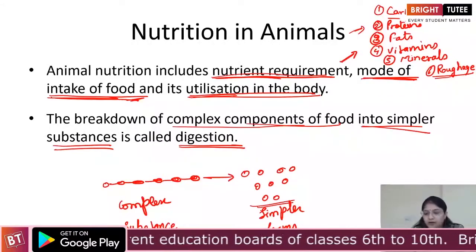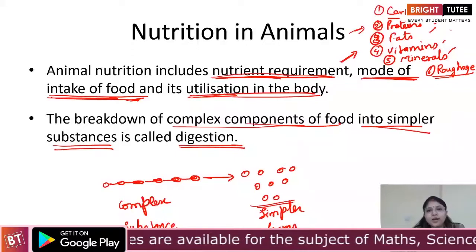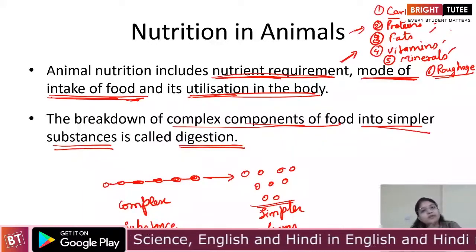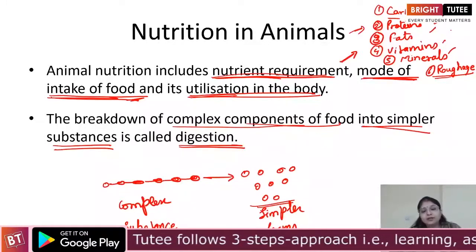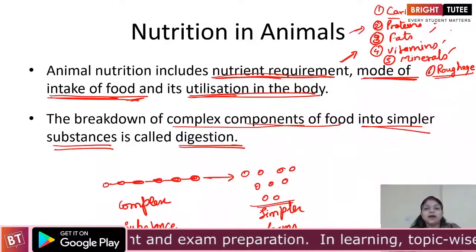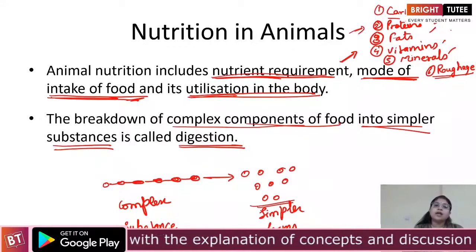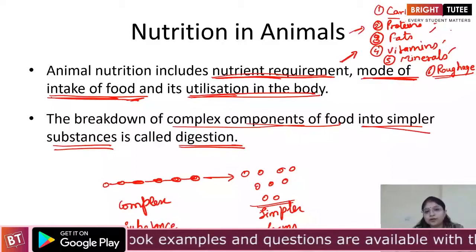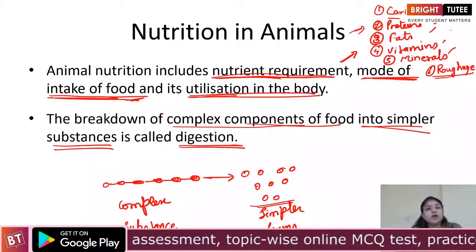Everything we eat — carbohydrates, proteins, fats, vitamins, and minerals — are complex substances. For example, the fat in oily food is a complex substance that is broken down into simpler substances before the body can utilize it, and this whole process is called digestion. In this chapter, we are going to discuss how digestion takes place in human beings, in grass-eating animals, and in some unicellular organisms.